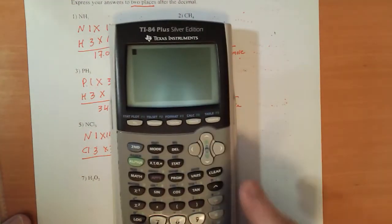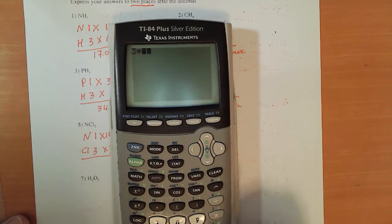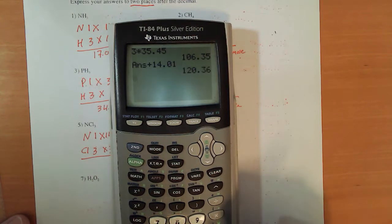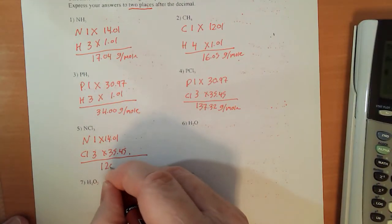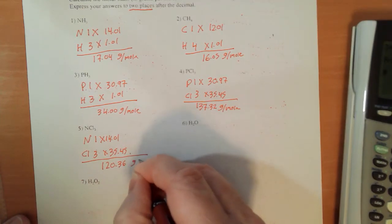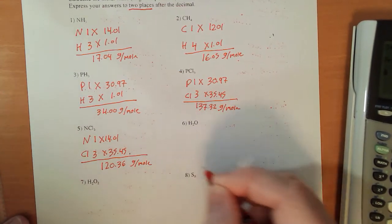So, 3 times 35.45 plus my 14.01 and I'm getting 120.36 grams per mole.